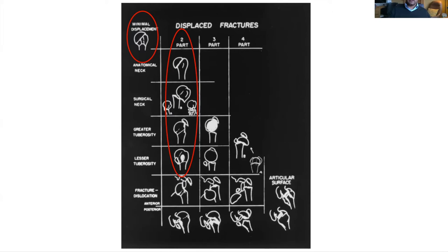Later on, fracture dislocations were also added onto the classification and they could either be anterior or posterior, and you can once again have two, three, or four-part fractures.